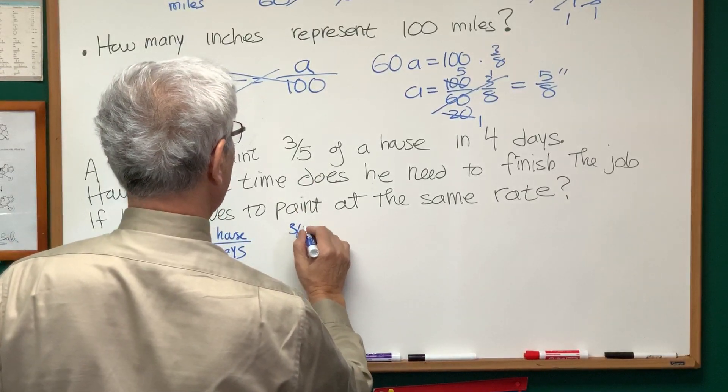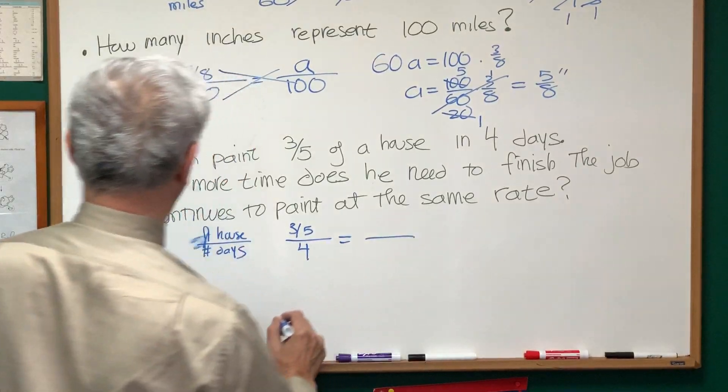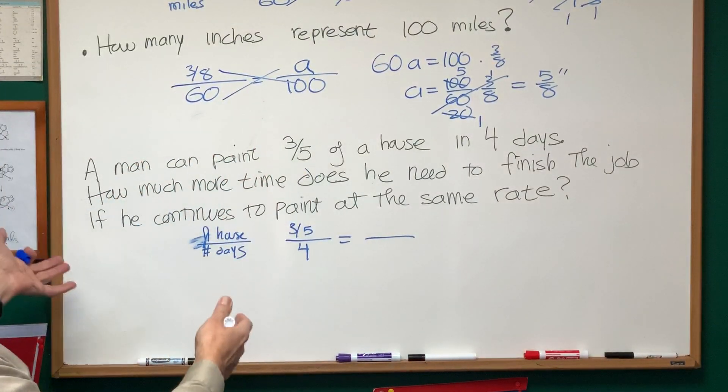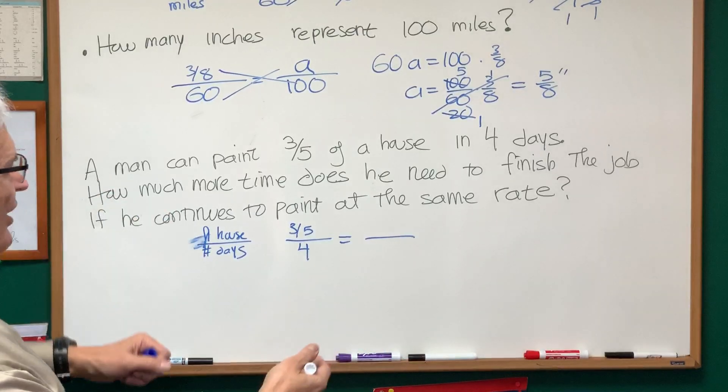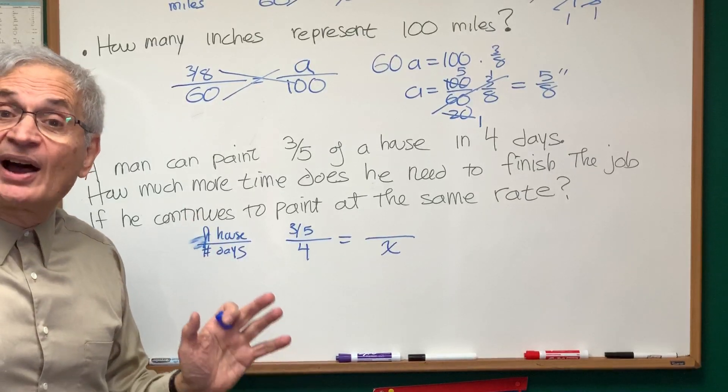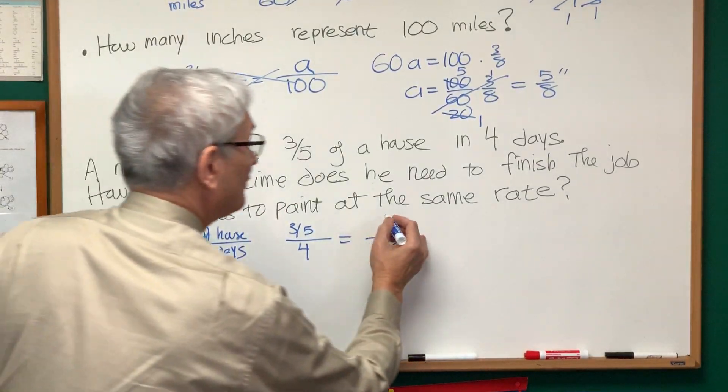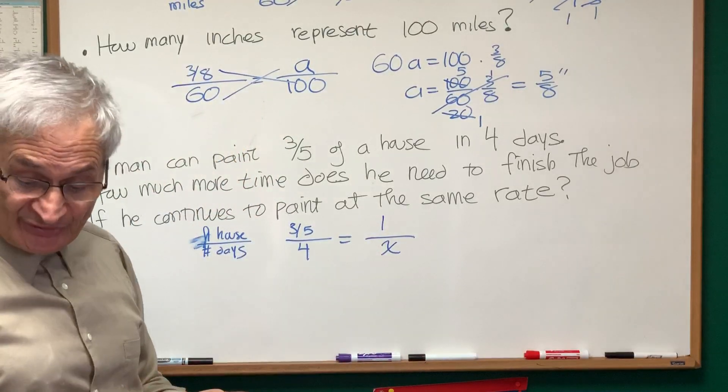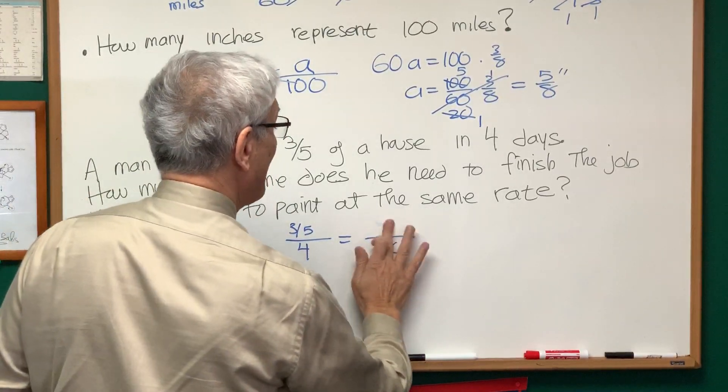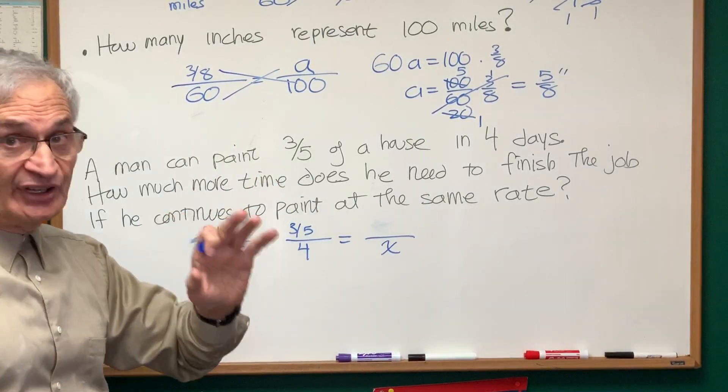So it's three-fifths of a house is to four days as to what? How many days to finish the entire house? That's what we're trying to find out. How many days? Now, if the question were, how long will it take him to complete the full house? We would put one in this numerator. But that's not the question. The question is, how many more, how much more time does he need to finish the house?